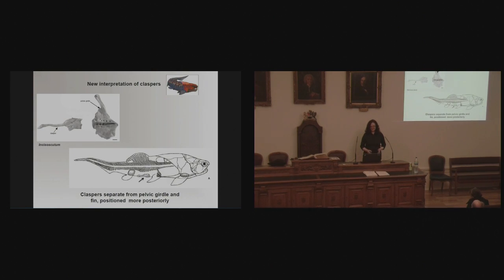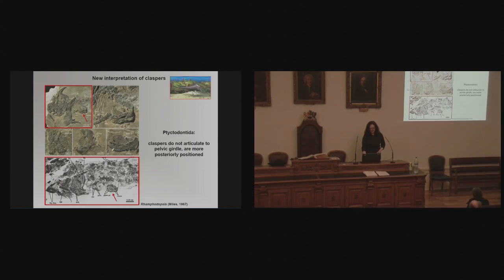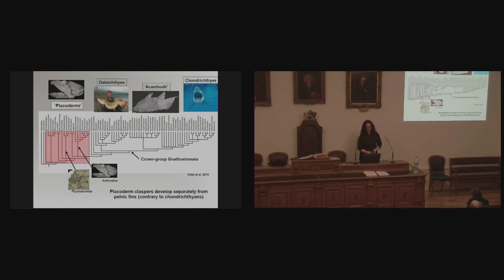Our new idea is that the claspers didn't articulate to the girdle or to the fin in placoderms — very different from what you see in sharks. Our new interpretation is that you have the pelvic girdle and then the claspers much further behind. Here's a reconstruction of an arthrodire called Coccosteus: there's the head and trunk shield, here is the pectoral fin, here's the pelvic girdle and fin, but the clasper is actually situated much further posteriorly. And in fact that's what we see in the ptyctodontids as well — in Rhamphidopsis, the claspers are separate from the pelvic girdle.